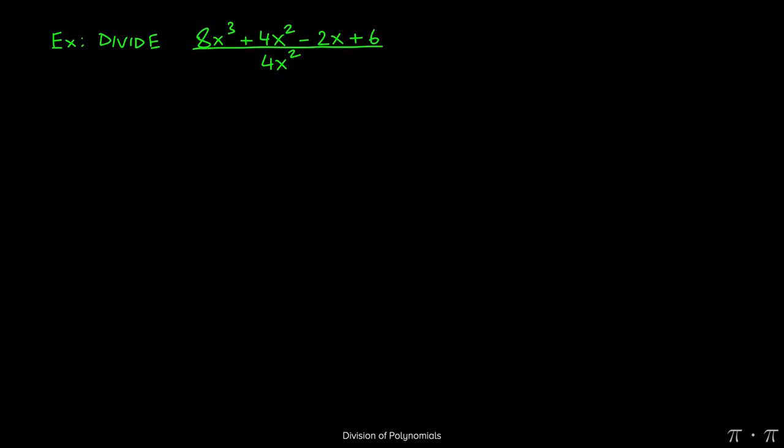Let's say we're asked to divide 8x cubed plus 4x squared minus 2x plus 6 by 4x squared. We see that we're dividing a polynomial by a monomial, which means we should be able to split up the problem into four separate pieces.